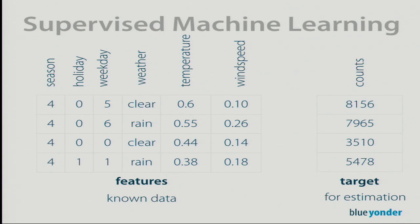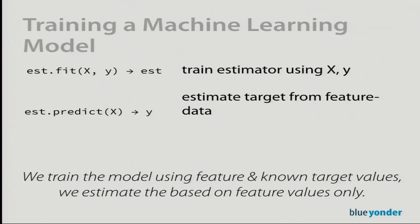On the right-hand side we have a variable called the target, which is closely associated with the features. The target is what we'd like to predict from our features — features are known data, and the target is what we want to estimate. We have one dataset where features and targets match, and we can use this to train a model that predicts.